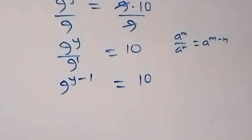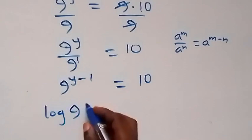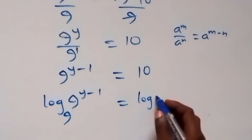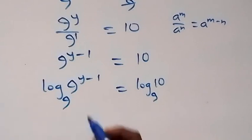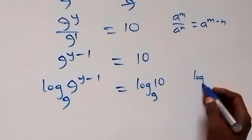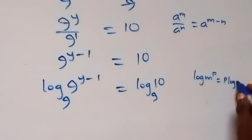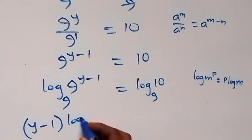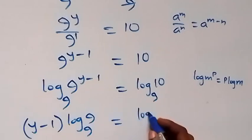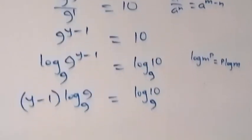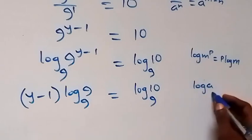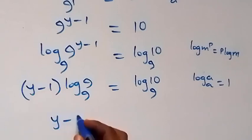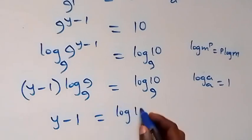Then let's take the log to base 9 on both sides. So we have log of 9 raised to power y minus 1, to base 9, equals log 10 to base 9. The power can come to the front — from the rule log of n raised to power p equals p log n. Then we can write this as y minus 1 times log 9 to base 9 equals log 10 to base 9. And since log a to base a equals 1, we have y minus 1 equals log 10 to base 9.